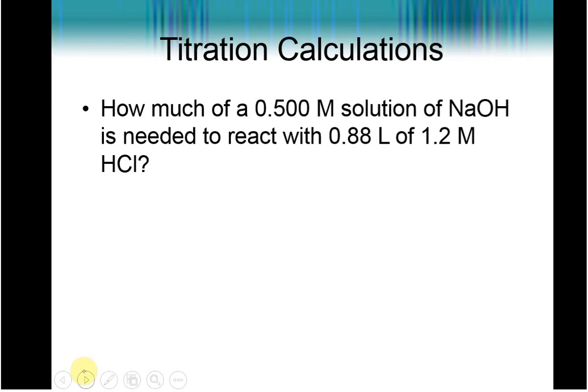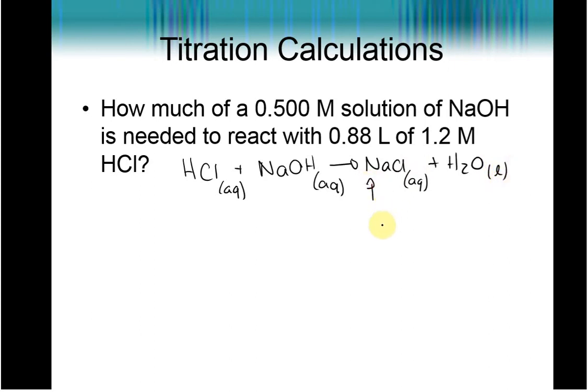So how much of a 0.5 molar solution of NaOH is needed to react with 0.88 liters of 1.2 molar HCl? I'll be honest, I really prefer to have my reaction written. So I'm going to go ahead and write that here. HCl plus NaOH goes to NaCl plus water. HCl is aqueous because chloride is usually aqueous and hydrogen isn't an exception. Or you could say sodium, hydroxide, and HCl are strong acids, so they're completely going to break apart. NaCl is completely aqueous because it's a sodium and a chloride compound. Either one would make that aqueous. And water is a liquid. And just as a check guys, sodium has a plus one charge. Chlorine has a minus one charge. NaCl is the right formula there.